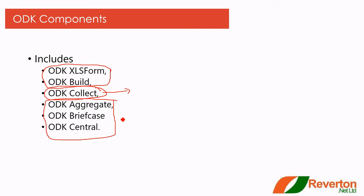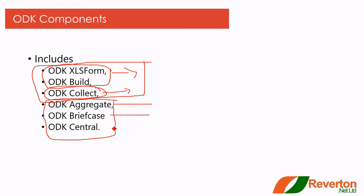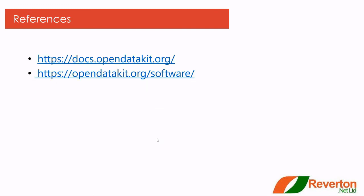To summarize: when we collect data, we use ODK XLS Form, ODK Build, and ODK Collect to create and collect data. To manage data, we use ODK Aggregate, ODK Briefcase, and ODK Central. That is all for this session. In the next video I will tell you more. The references used to create this presentation are also provided.